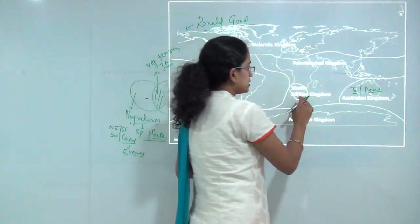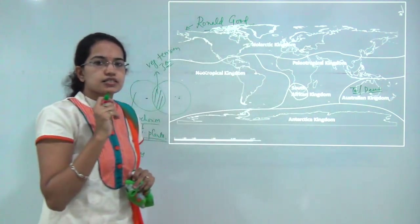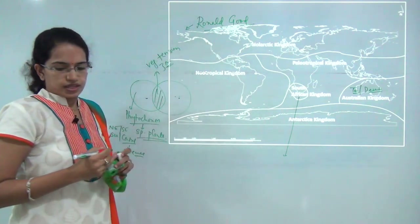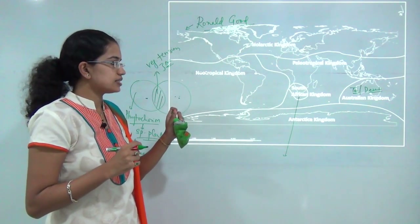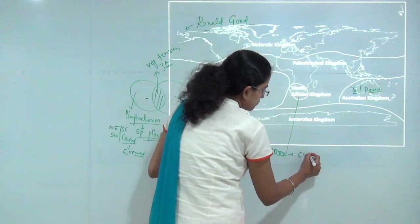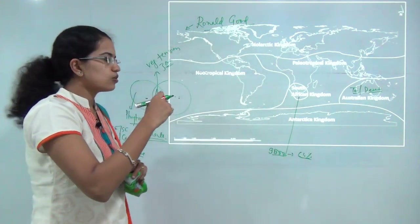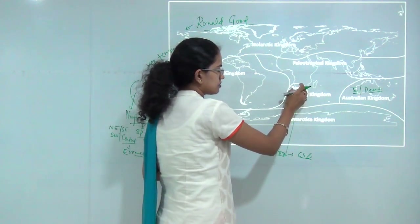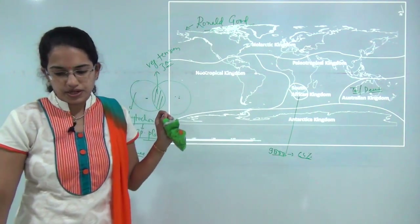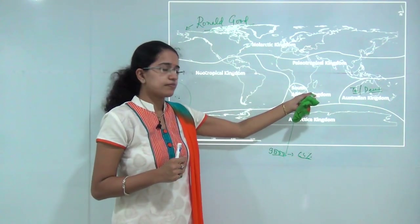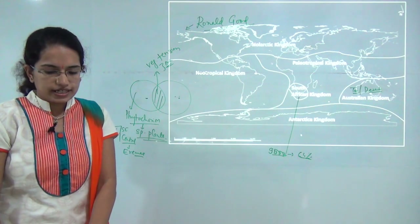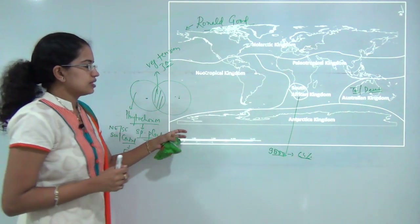The next is the South African kingdom, considered the smallest classified region by Ronald Good. Despite being the smallest, it has the highest diversity, with around 9,000 vascular plants, of which approximately 64% are endemic — meaning they are local or specific to that area.